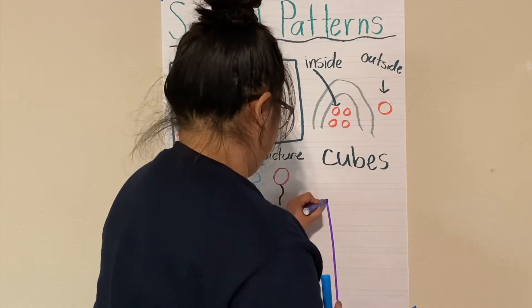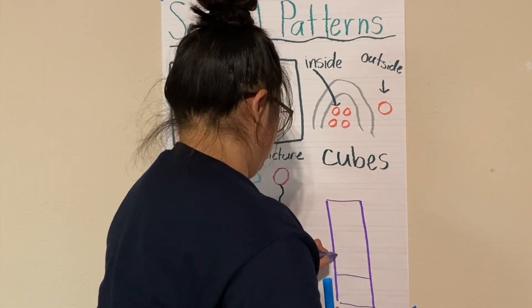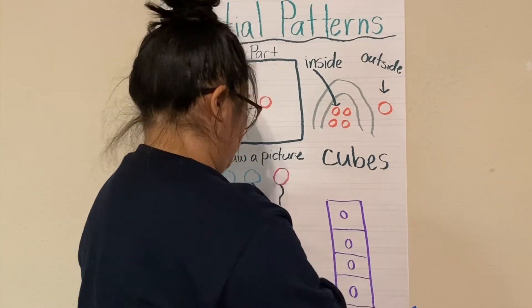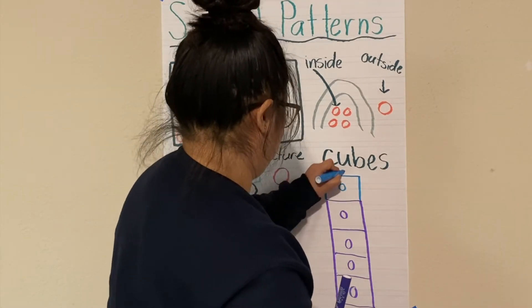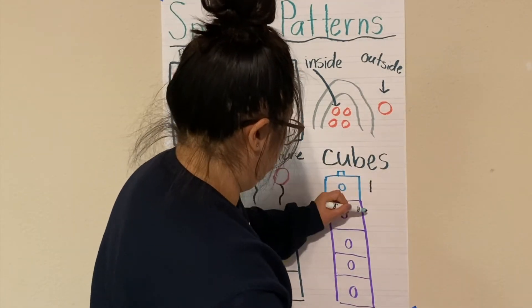And the last example of a spatial pattern I'm going to show you are with cubes. So I have four purple cubes and one blue cube to make five in all.